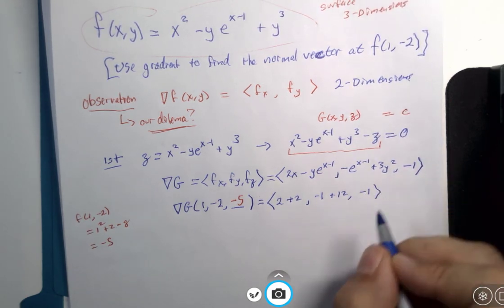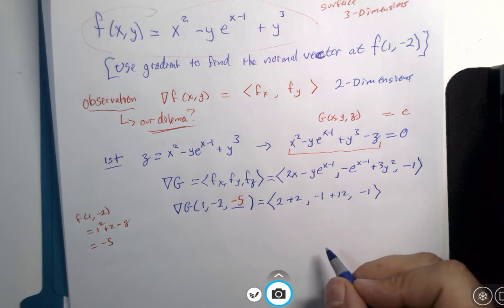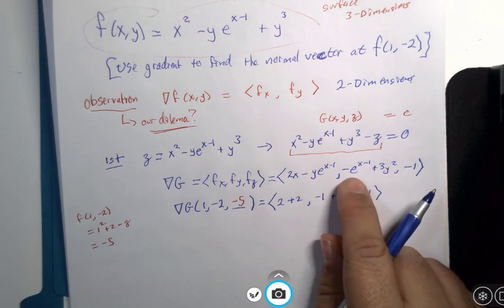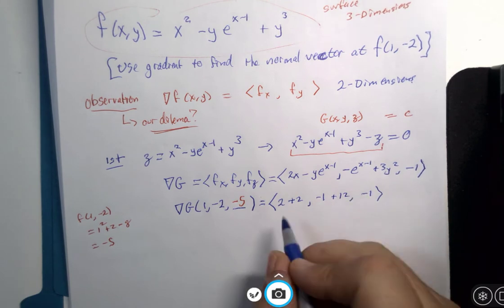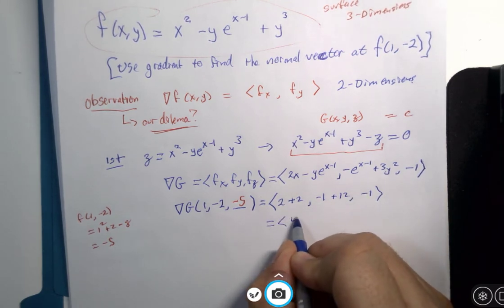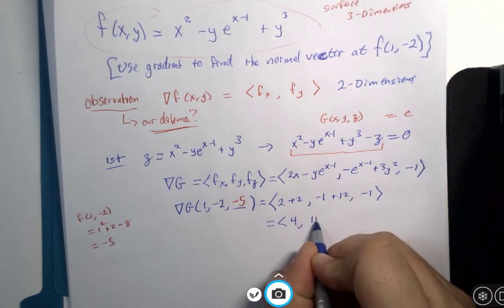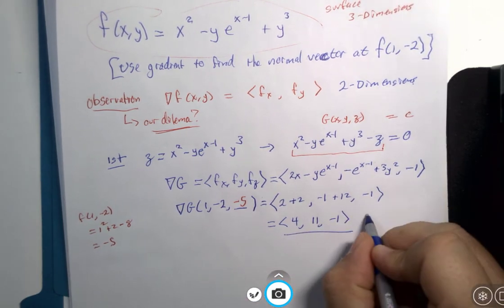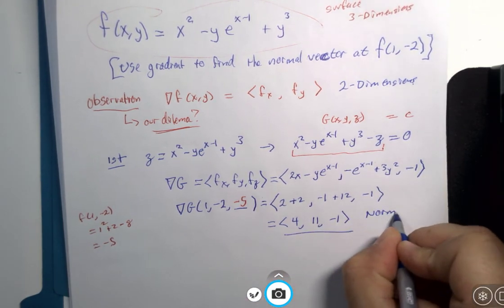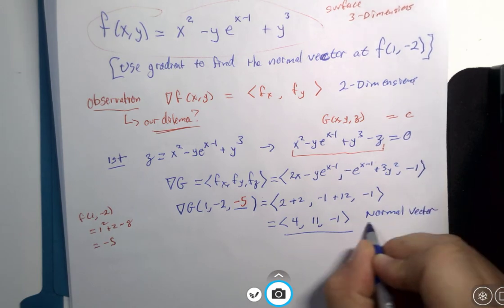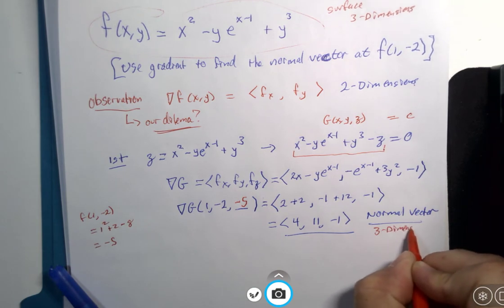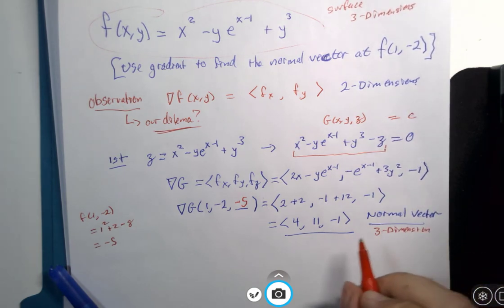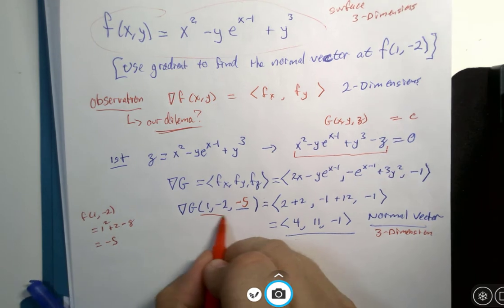I kind of get quiet so you can do some arithmetic without having to do it over my voice. Let's just check here for minus signs. The y derivative is, yeah, I'm okay with that. So what do we get as our vector here, 4, 11, and negative 1? This is my normal vector in three dimensions at the point which is here.